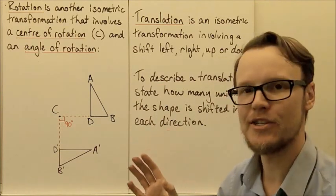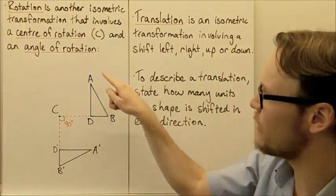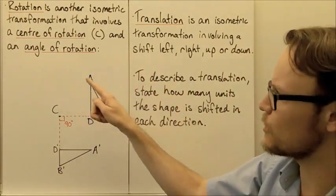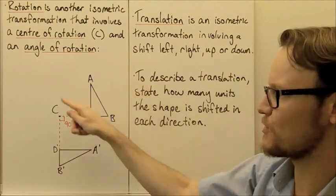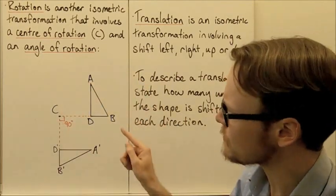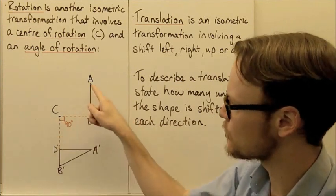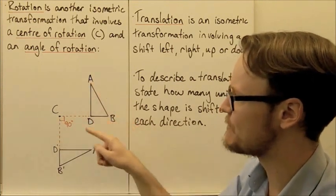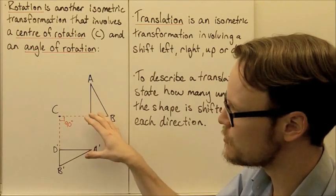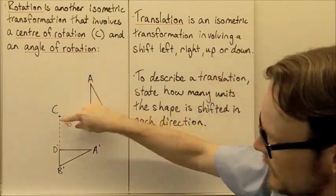We also need to know what direction that is — either clockwise, the same direction as the clock travels, or anti-clockwise, which is the opposite direction. Here we have a triangle ABD, and we are rotating it through 90 degrees clockwise around C.